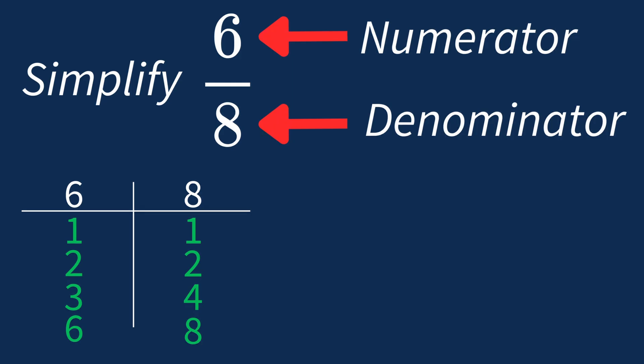Now when we compare these lists, we can see that the largest common factor between 6 and 8 is 2.